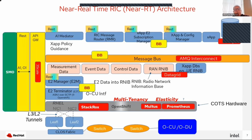The near real-time RIC architecture shows several different modules, and the idea is to apply building blocks to these modules to optimize them. For example, can we use the building blocks on the message bus? We are also looking at potentially using Red Hat middleware as replacement parts for some RIC components — for example, using AMQ Interconnect as a component of the message bus.